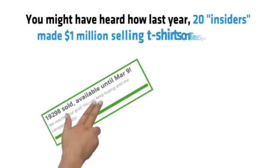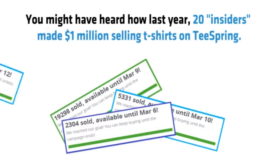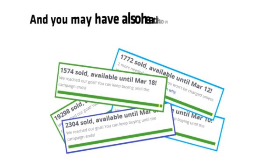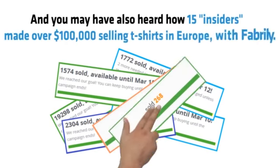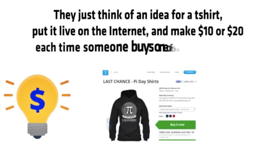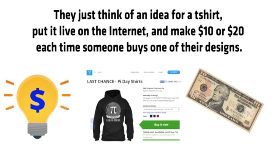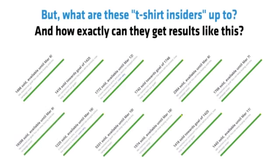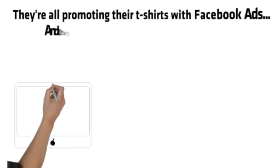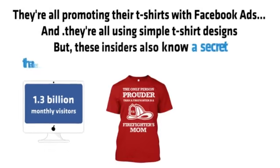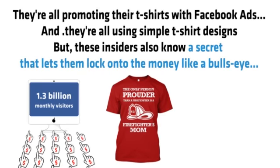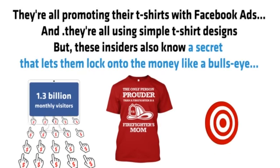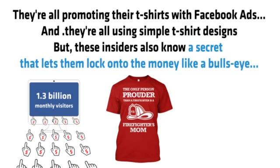You might have heard how last year, 20 insiders made a million dollars selling t-shirts on Teespring. And you also might have heard how 15 insiders made over $100,000 selling t-shirts in Europe with Fabrily. They just think of an idea for a t-shirt, put it live on the internet and make $10 or $20 each time someone buys one of their designs. It sounds like the perfect business. But what exactly are these insiders up to and how exactly can they get results like this? Well, they're all promoting their t-shirts with Facebook ads and they're all using simple t-shirt designs just like everyone else. But these insiders also know a secret that lets them lock onto the money like a bullseye.